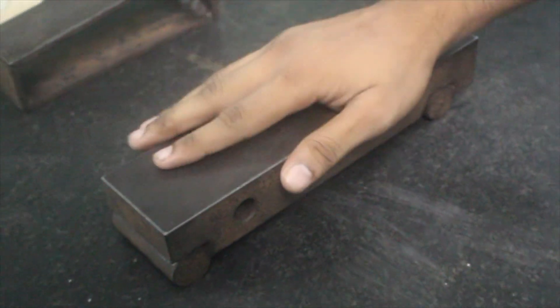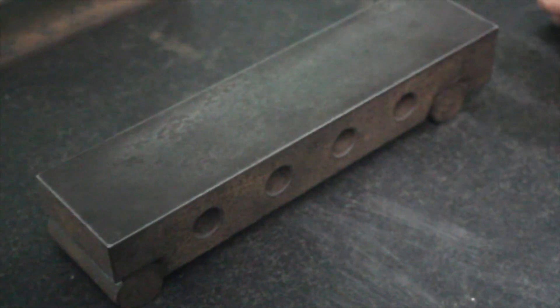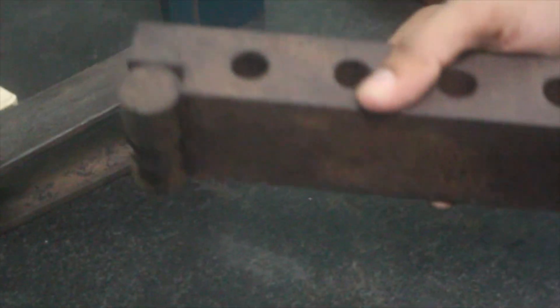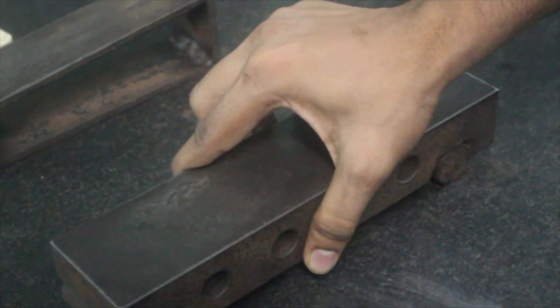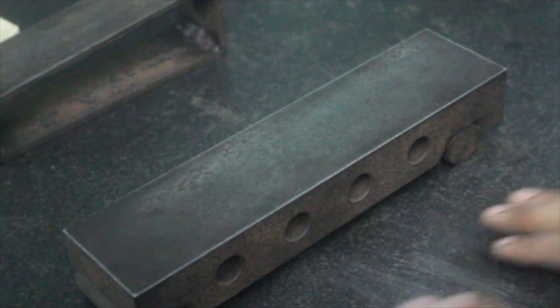Now we are going to look into sine bar and its setup. This is the basic structure of a sine bar. Here we have a main body and two rollers. These rollers are attached to the main body and are provided such that there is a single point of contact with the flat surface.